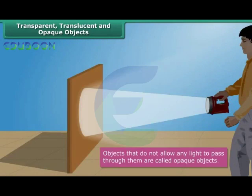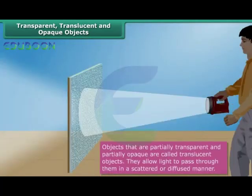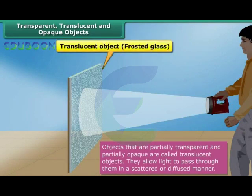Objects that do not allow any light to pass through them are called opaque objects. As a result, we cannot see through them. When light falls on an opaque object, its shadow is formed on the other side of it. Wood, sheets of metal, dark-colored plastics, rocks, etc. are examples of opaque objects. Objects that are partially transparent and partially opaque are called translucent objects. They allow light to pass through them in a scattered or diffused manner. Frosted glass, tracing paper, greased paper, etc. are examples of translucent objects.